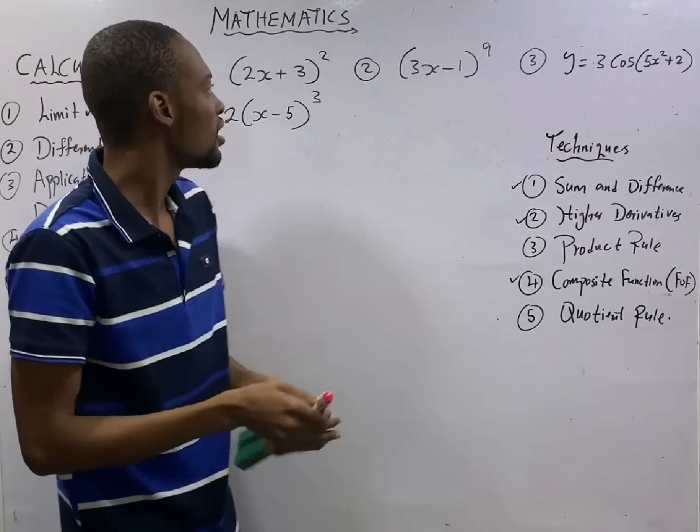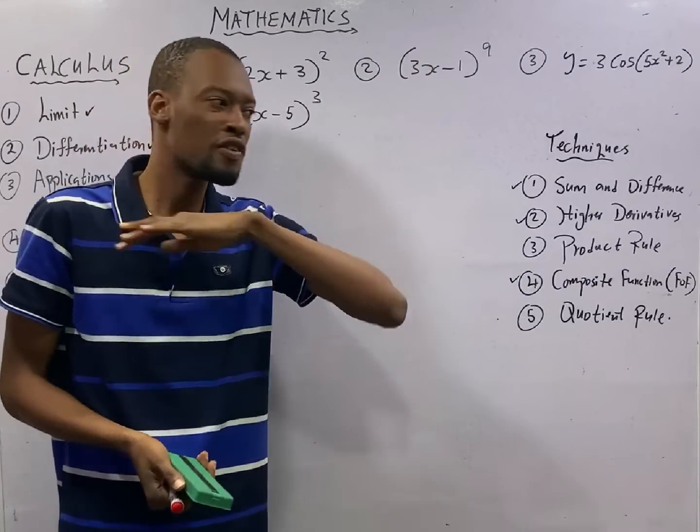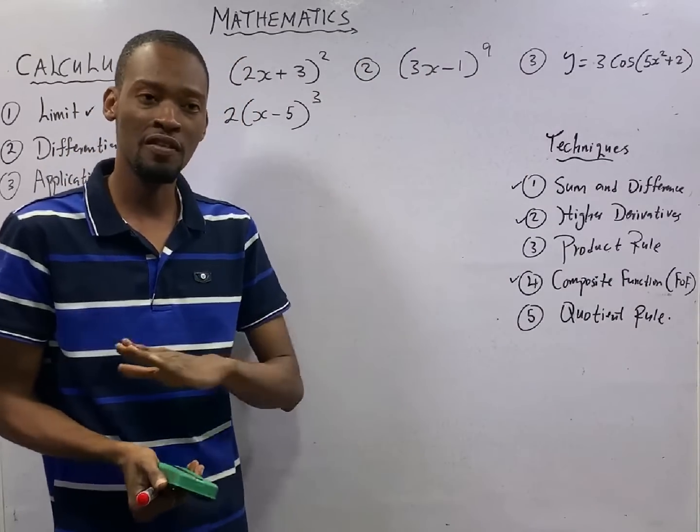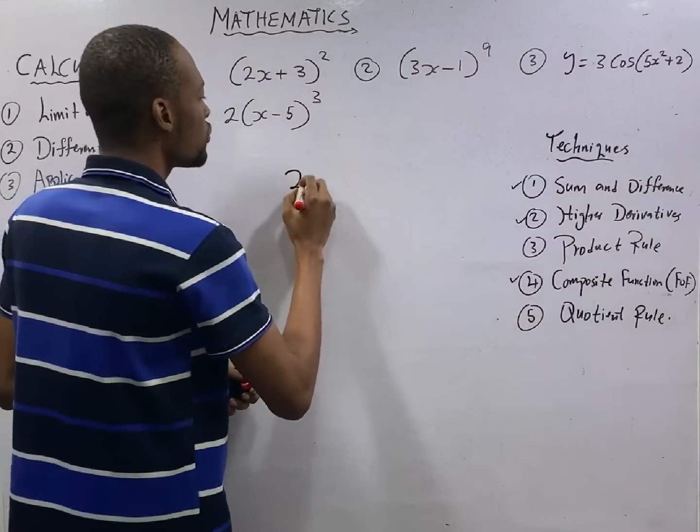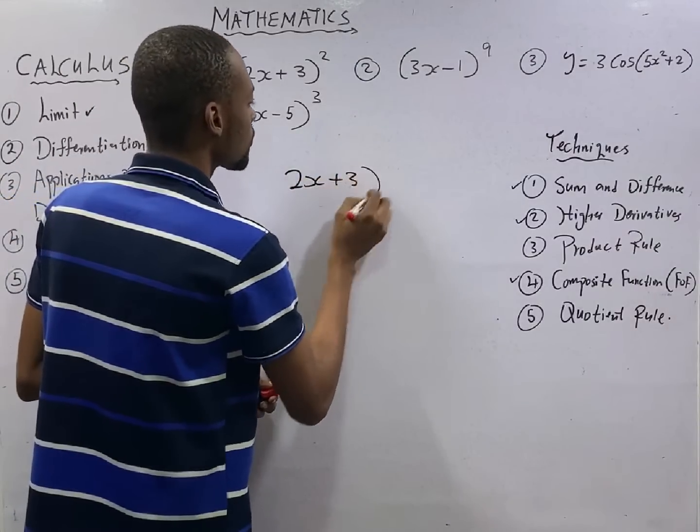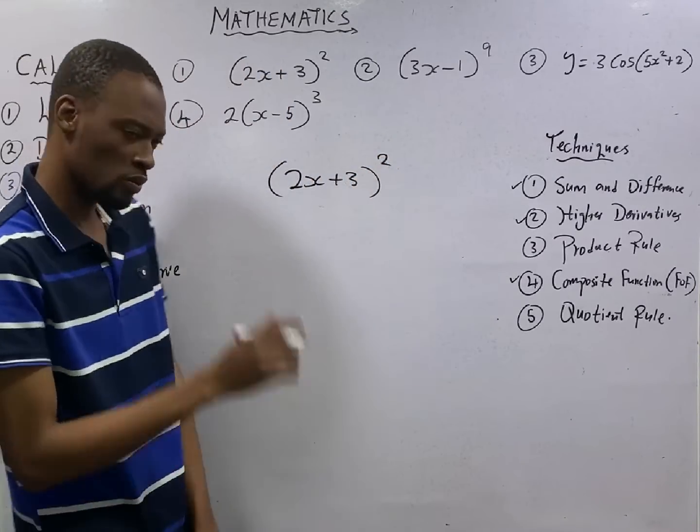There is, and there is domain. Anytime you see something like this, this is what you do. Forget grammar, forget formula, forget law. So long it is a composite function. If you have 2s plus 3 square. What you should do is, one, differentiate the bracket.